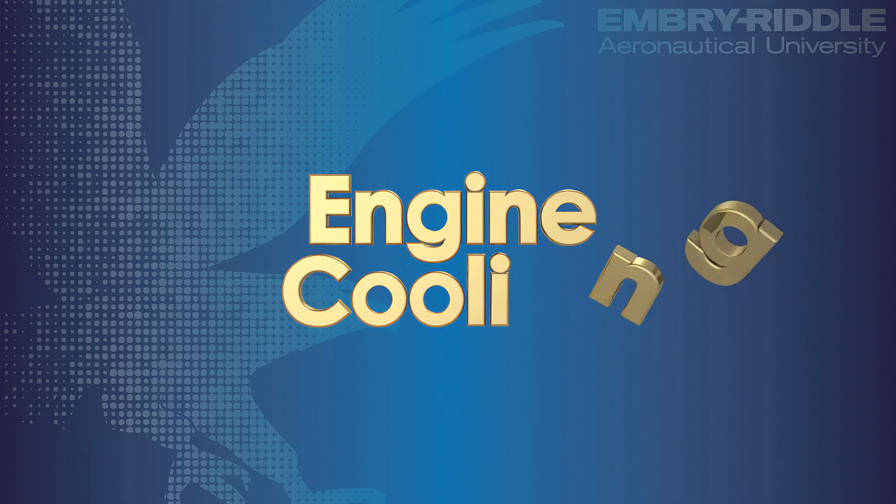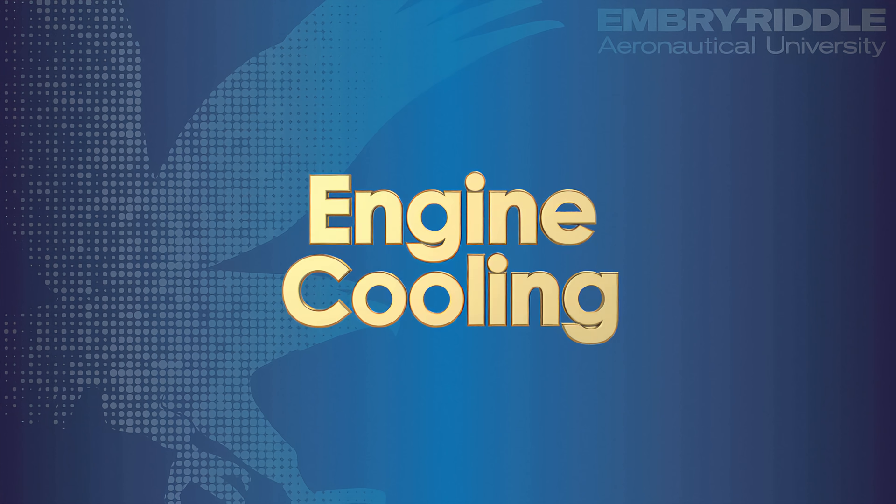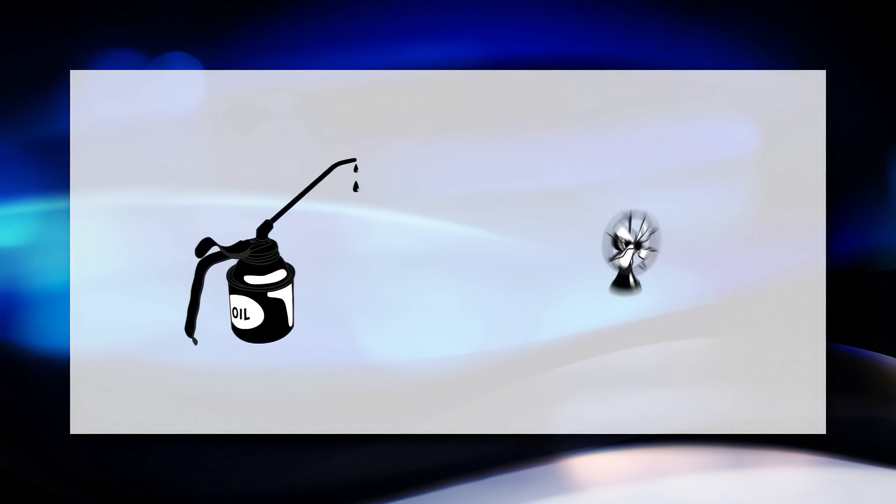Even when the engine isn't detonating or experiencing pre-ignition, the temperature of an engine can get quite hot. Like car engines, airplane engines have a cooling system in order to prevent engine damage or engine failure. There are two major ways we cool our engine, oil and air.